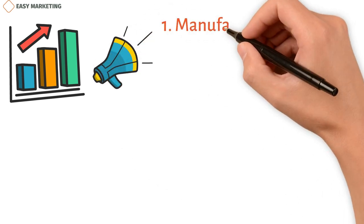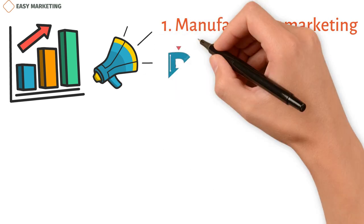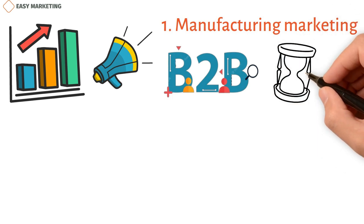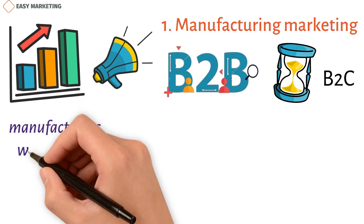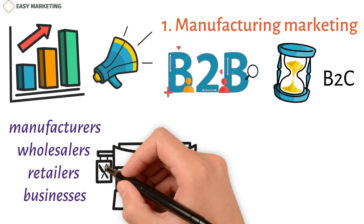Manufacturing Marketing. Marketing to businesses is what B2B marketing is. It can be harder to understand, and the sales process takes longer than with B2C. Other businesses, such as manufacturers in the supply chains downstream, wholesalers, retailers, or businesses that use the services of other businesses, like restaurants or building firms.